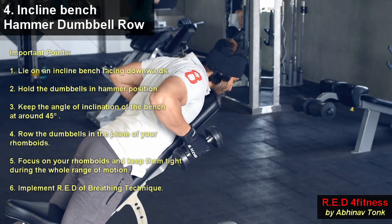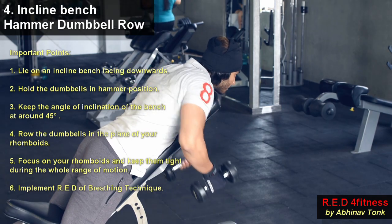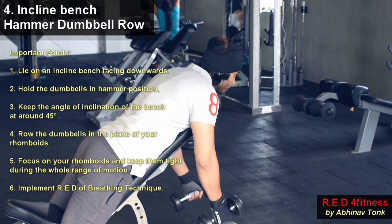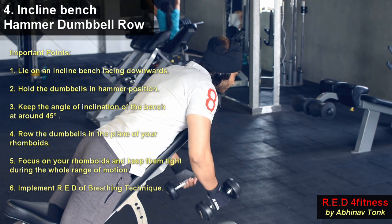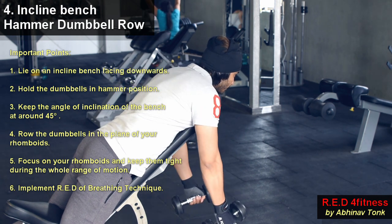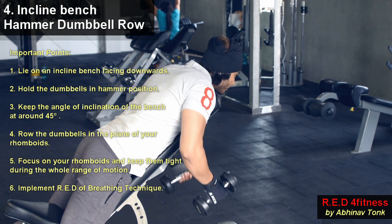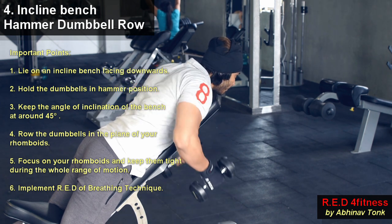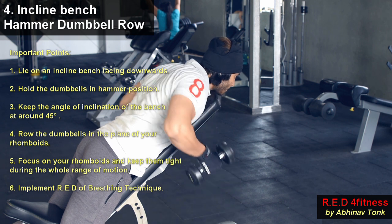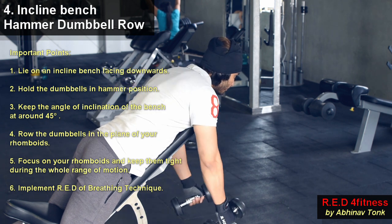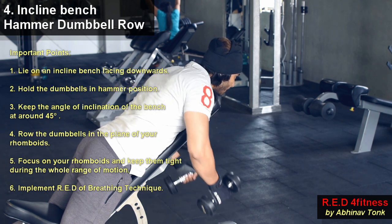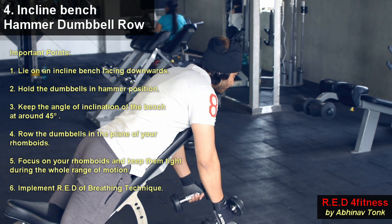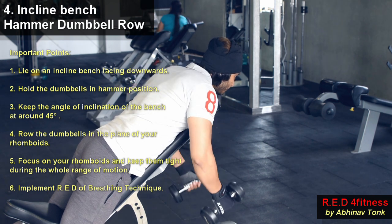The next exercise is the inclined bench hammered dumbbell row. Lie on an inclined bench facing downwards with the angle of inclination set at around 45 degrees. Row the dumbbells in the plane of your rhomboids, focusing on your rhomboids and keeping them tight during the whole range of motion — this is a common point across all the exercises.